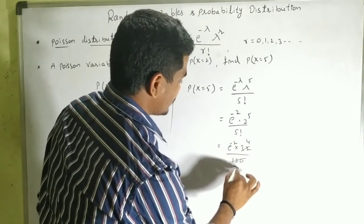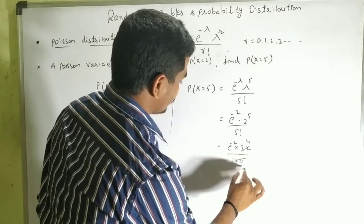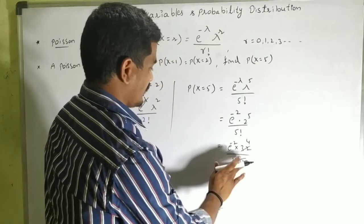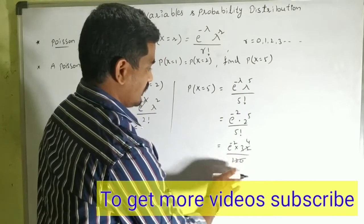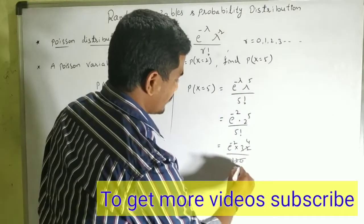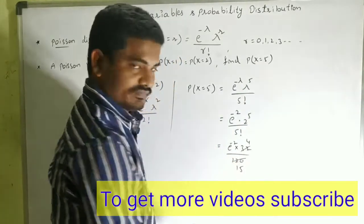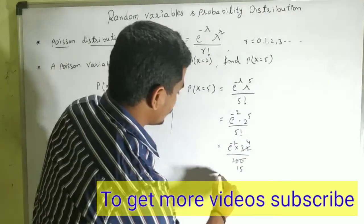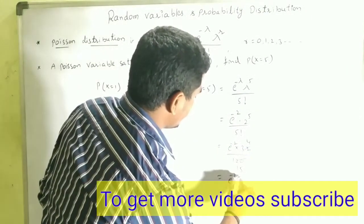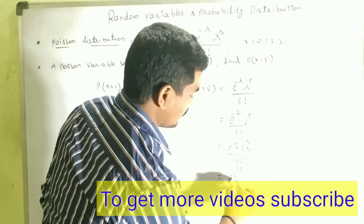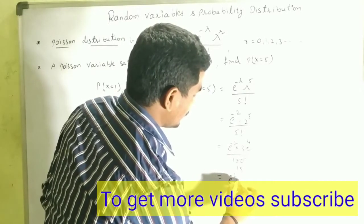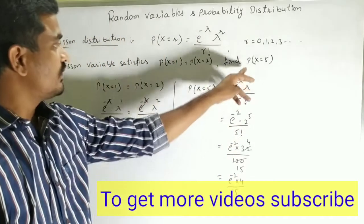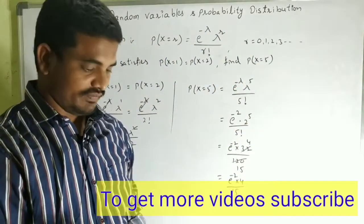Simplifying 32/120 by cancellation: 32 and 120 share a common factor of 8, giving 4/15. So the final answer is P(X = 5) = e^(−2) × 4/15.